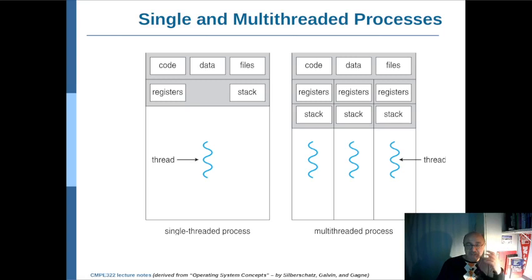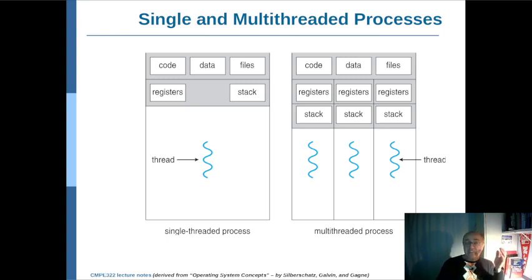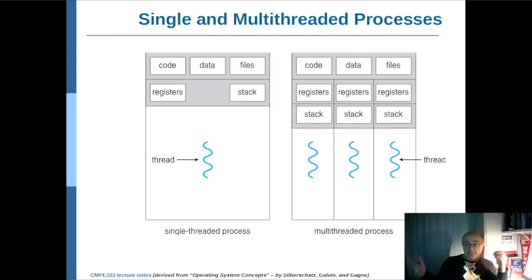The code, data, and files are shared, but the registers are different because one thread might be executing an instruction operating on registers R1 and R2, while another thread is also executing an instruction needing R1 and R2 — but R1 and R2 used by instructions in one thread would be specific registers for that core, and separate for the other thread.